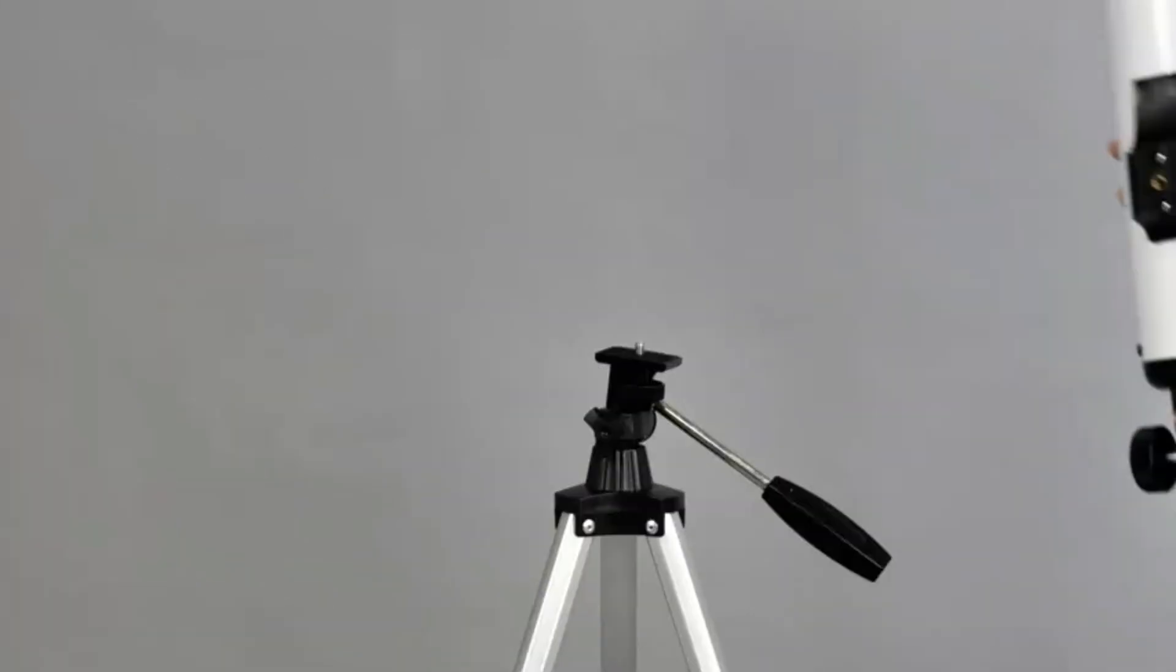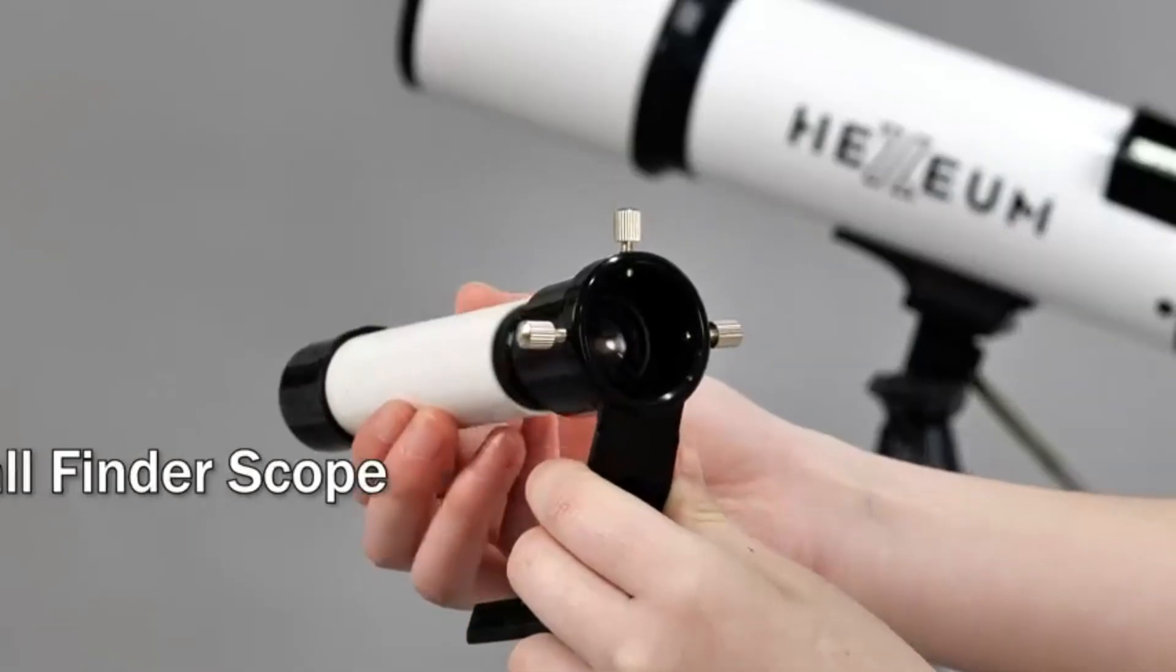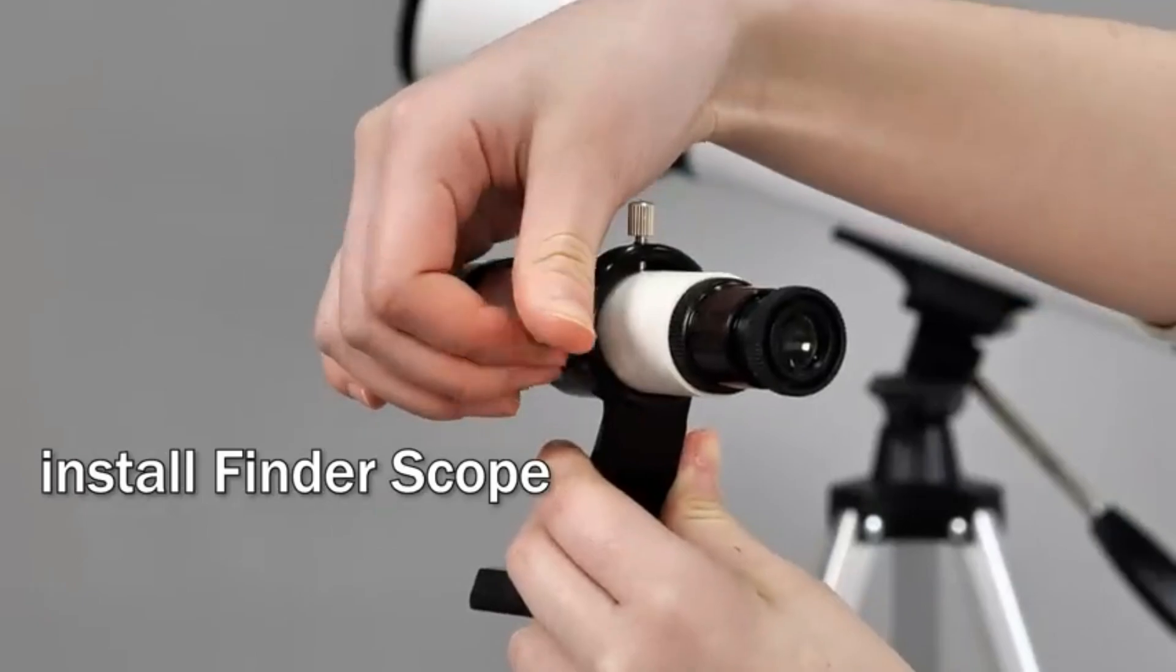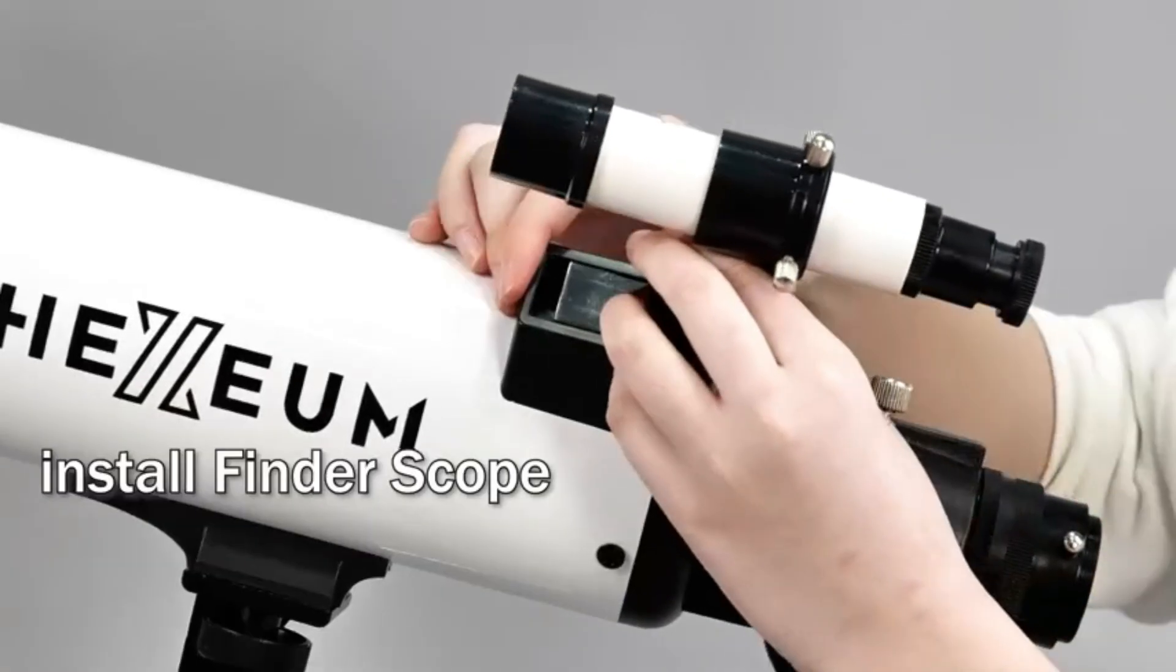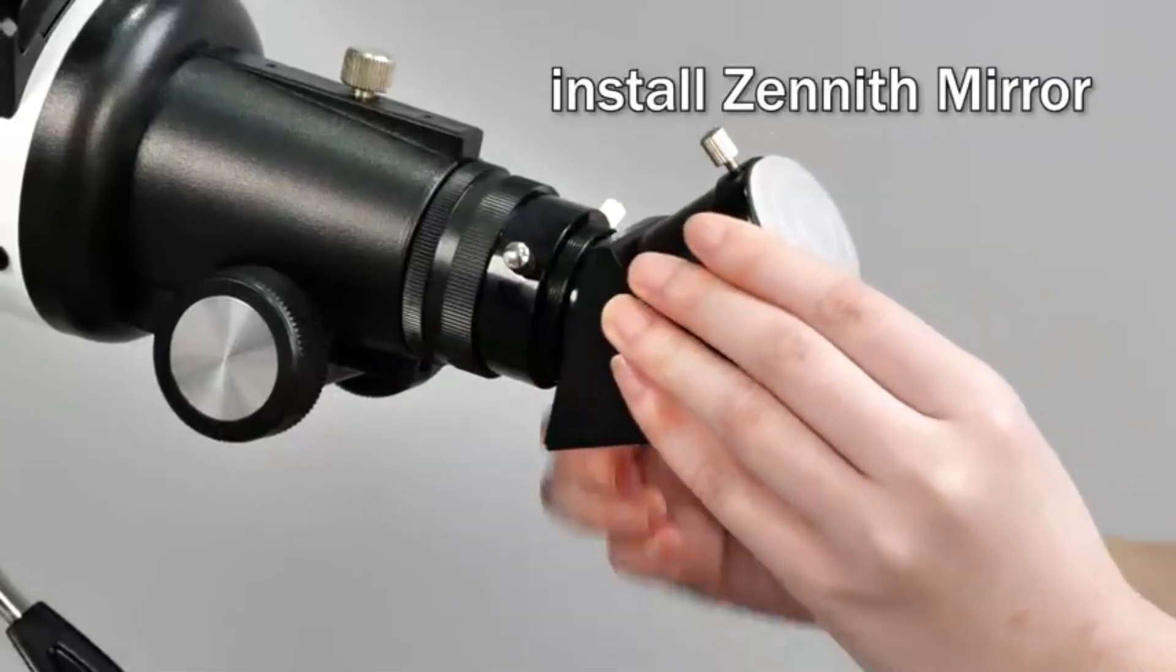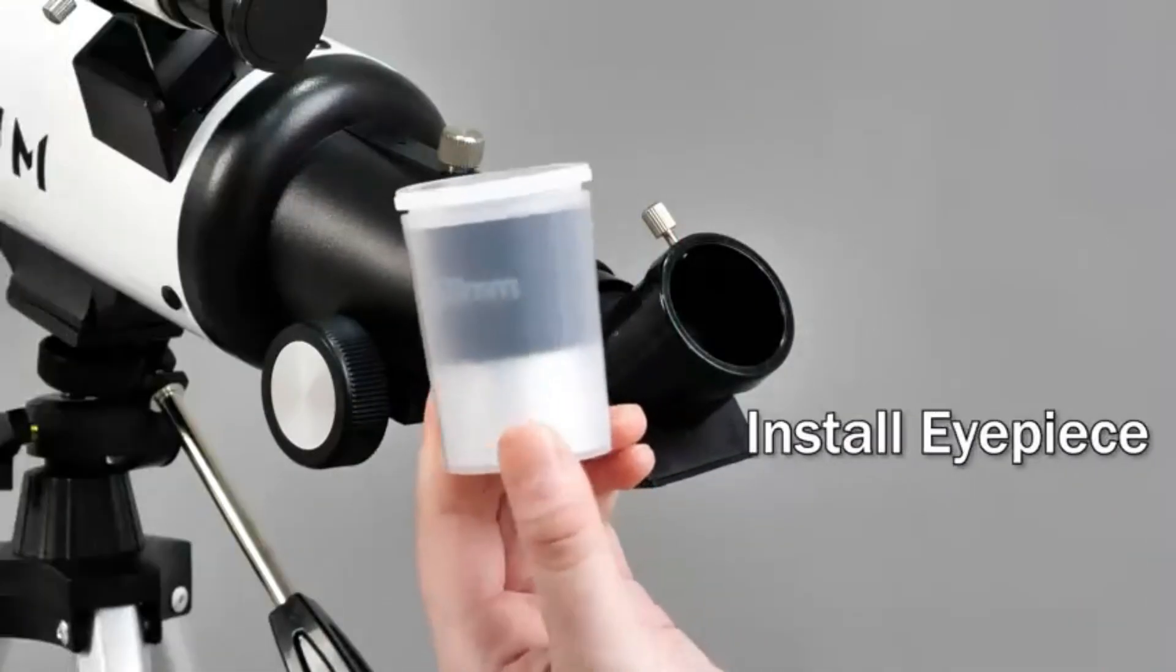Optimum Magnification and Easy Object Locating. Equipped with two high-quality eyepieces, 25mm and 10mm, 24x and 60x magnification, and a 3x Barlow lens that triples the magnification power. The 5x24 finder scope makes it easy to locate objects, with the ability to magnify the moon up to 72x or 180x for detailed views.